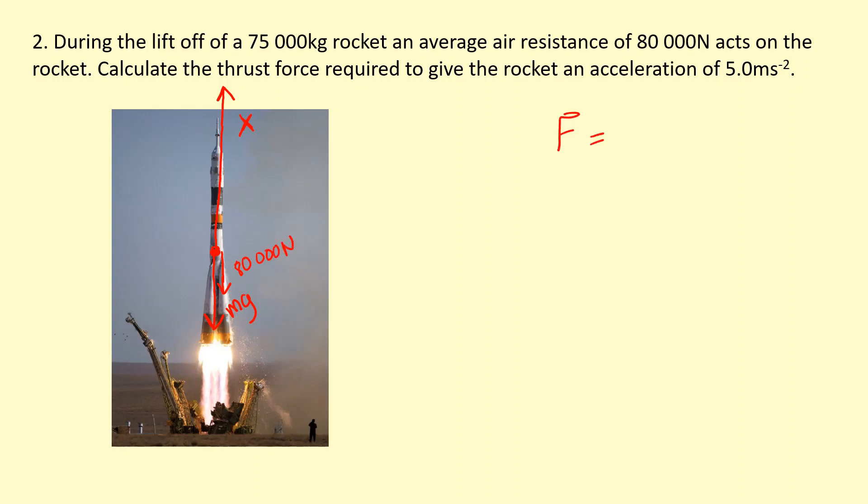So F equals ma. The resultant force upwards, so I'm going to say x, and then we'll subtract the other forces which are in the opposite direction which is mg, 75,000 times 9.81, and I'm going to subtract the drag force equals the mass of the object times the acceleration which we know is 5.